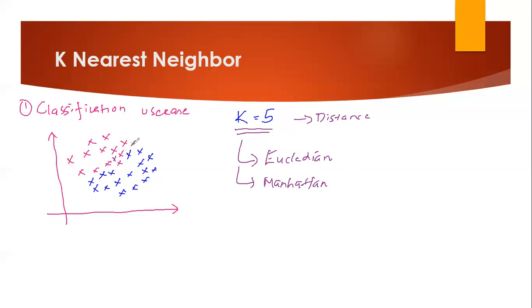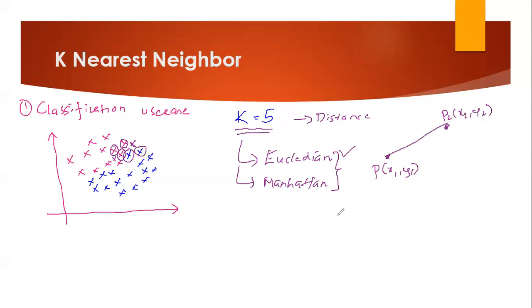Let me draw a clearer example. Suppose my new point is here, and with K equal to 5, I'll find the five nearest points using Euclidean distance. My first nearest point, second, third, fourth, and fifth nearest points are identified. To understand Euclidean distance: suppose I have two points P1 at (x1, y1) and P2 at (x2, y2). The Euclidean distance formula is: ED = √((x2−x1)² + (y2−y1)²).